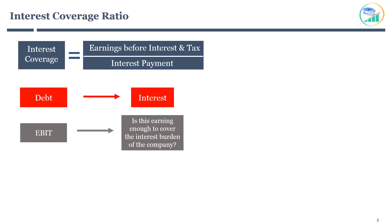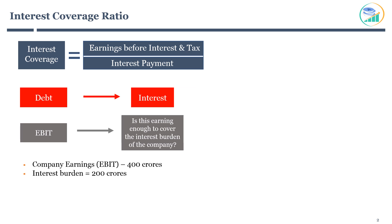For example, the company has earnings before interest and tax of 400 crore. Moreover, it has an interest burden of 200 crore on its outstanding debt. Here, we clearly know that the company has sufficient funds to manage its debt obligation. In this case, interest coverage will be earnings before interest and tax divided by interest payment on debt — hence, the interest coverage ratio will be calculated as 2.